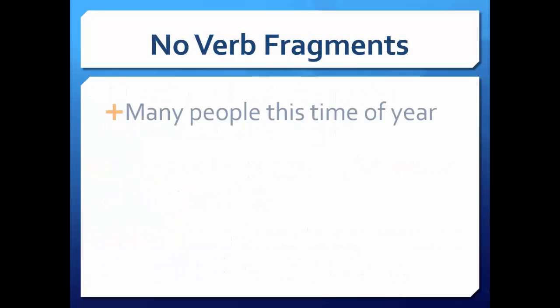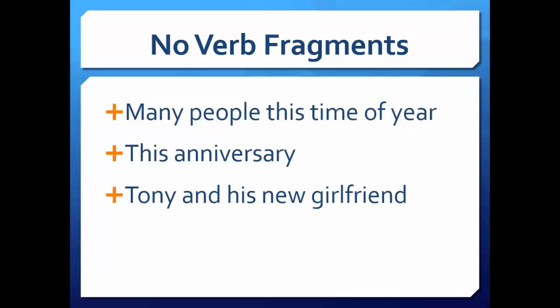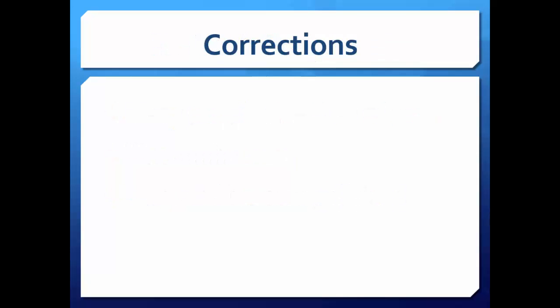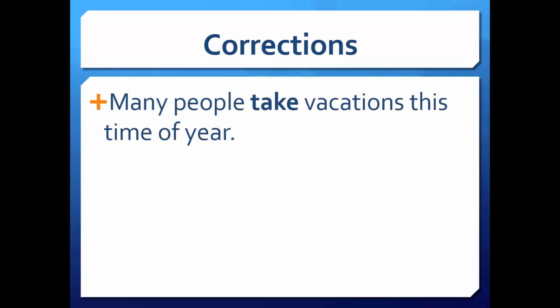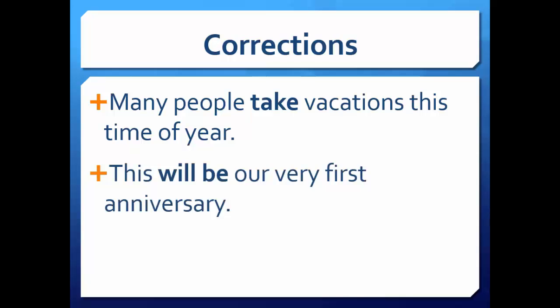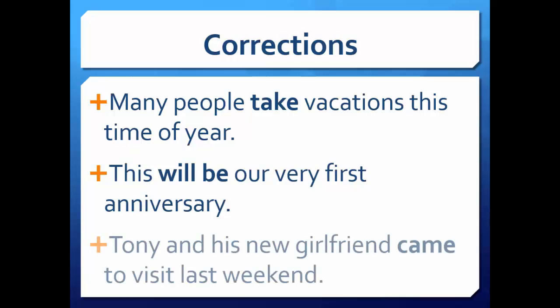In these examples we know who or what we are writing about, but not what is happening. What do people do this time of year? What about the anniversary? What about Tony and his new girlfriend? You need to add verbs. Then you may have sentences like these: 'Many people take vacations this time of year.' 'This will be our very first anniversary.' 'Tony and his new girlfriend came to visit last weekend.'